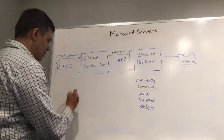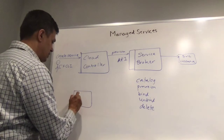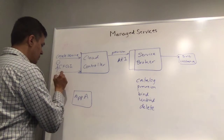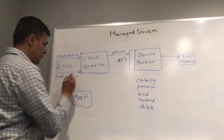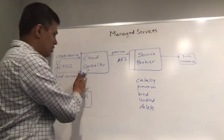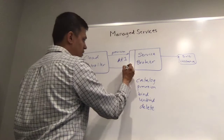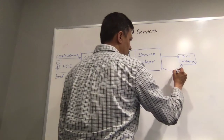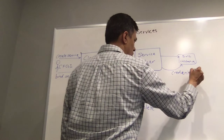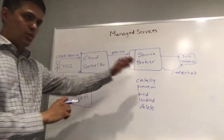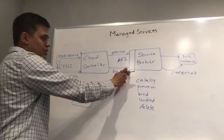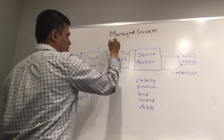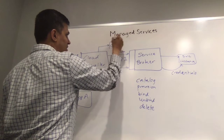After the service is created, the developer would like to bind that service with an application. The developer issues the bind service command, giving the application name and the service instance name to the cloud controller. The cloud controller will then issue the bind command on the service broker, and the service broker creates credentials for the application to connect with the service instance. The credentials are returned back to the cloud controller, which stores them in the local relational data store called ccdb, or cloud controller database.